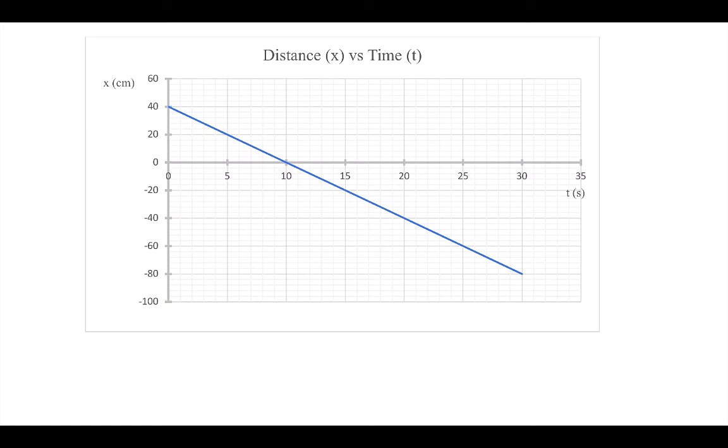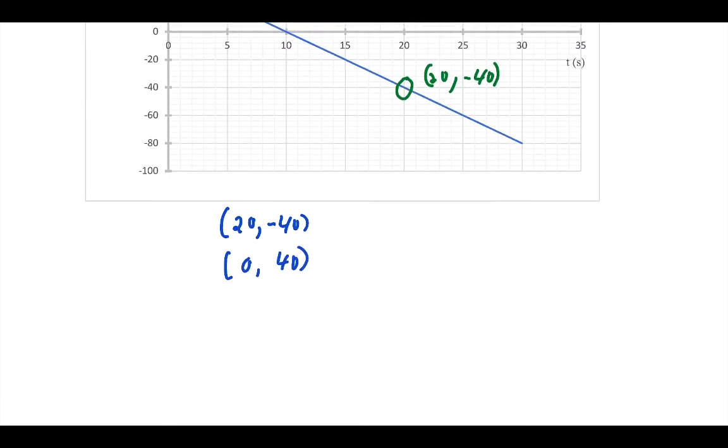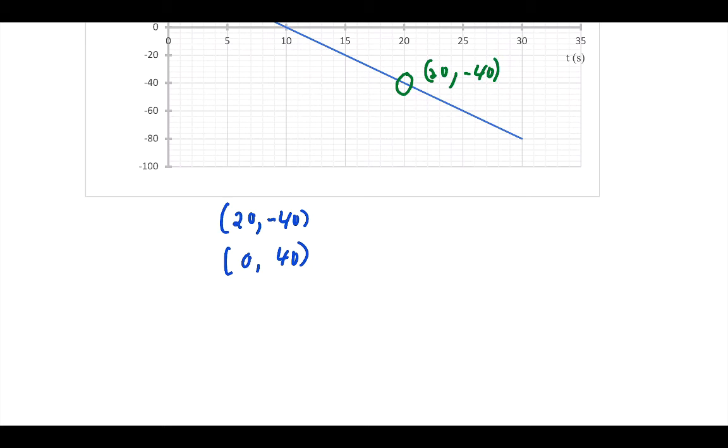Here again, I have another distance time graph. I'll pick two points here. Let's go with the beginning point here, which is at 0, 40. And let's pick a point down here, just for fun. This point is 20, negative 40. My final point is 20, negative 40. My initial point is 0, 40. Sometimes I like to write them on top of themselves like that, so it helps me.